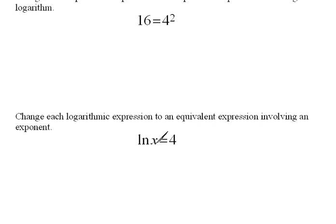In order to switch this to an exponential form, we need to take the base here, which is not written. So what is the base when we're working with natural log? That would be a base of e. So we're going to take the base, raise it to the other side, that's the exponent, equals the argument, which in this case is x. So our exponential form here would be e to the fourth power equals x.